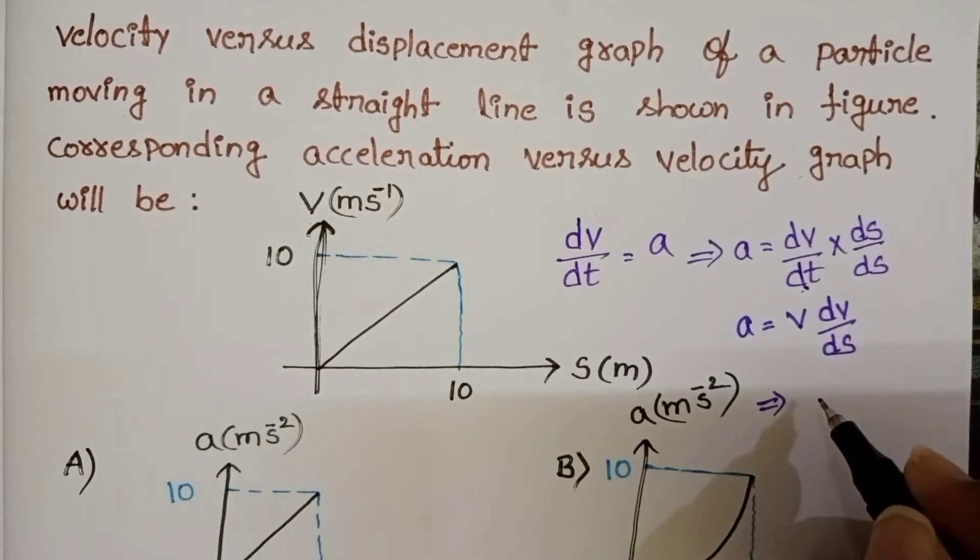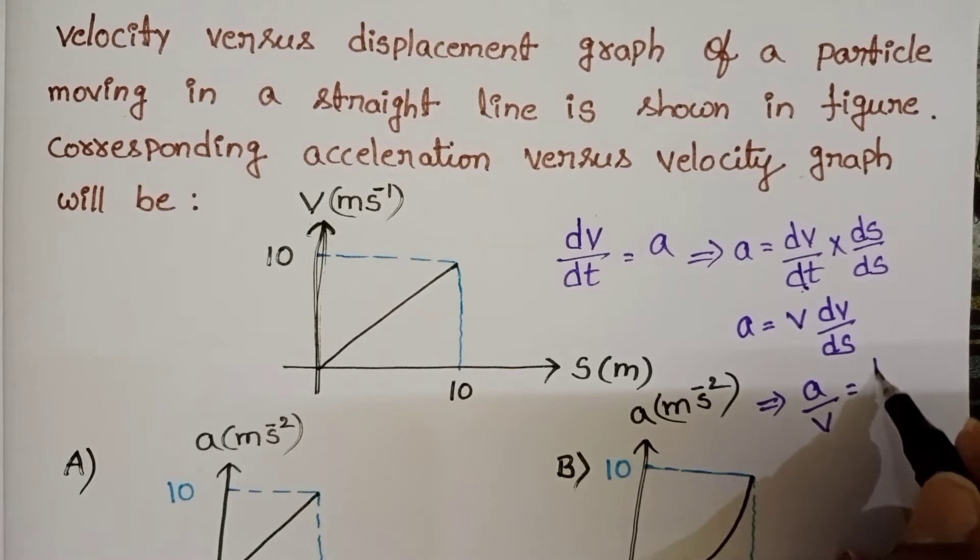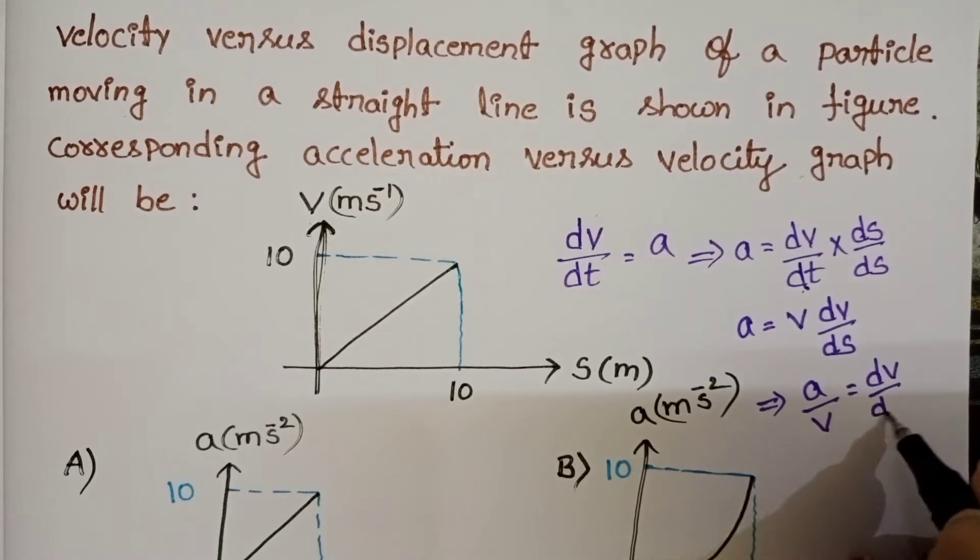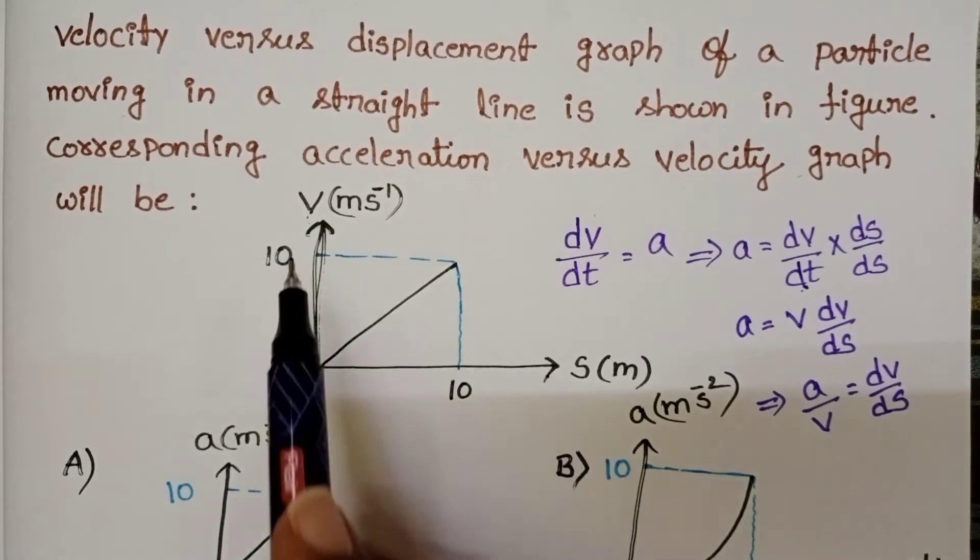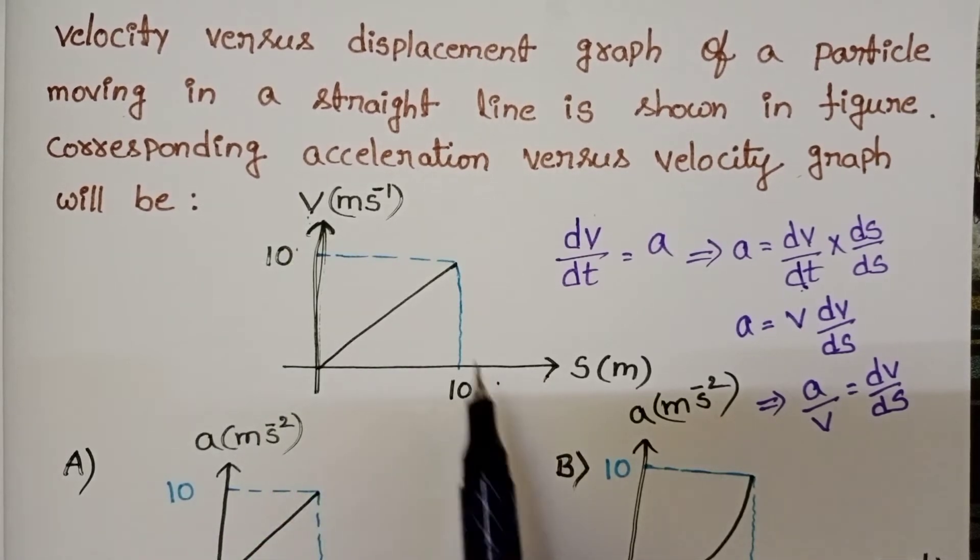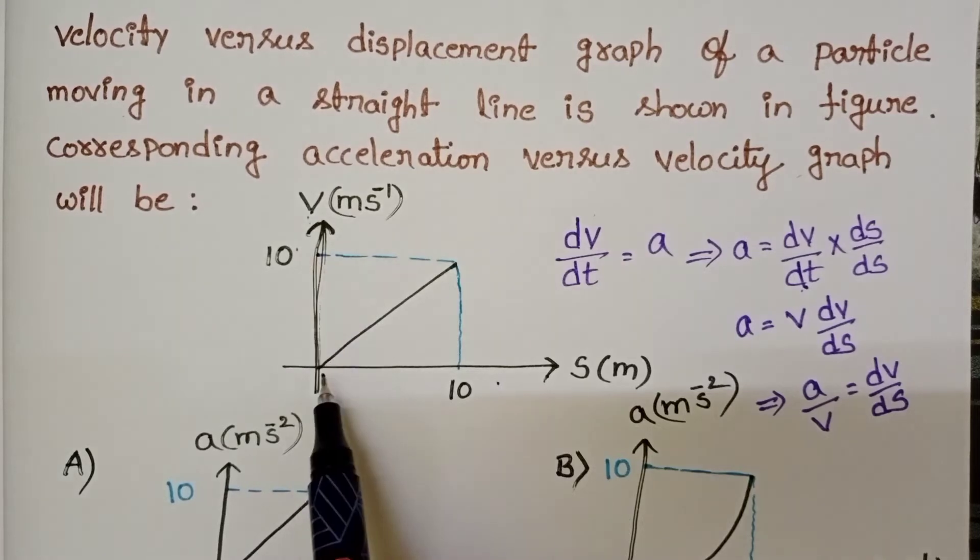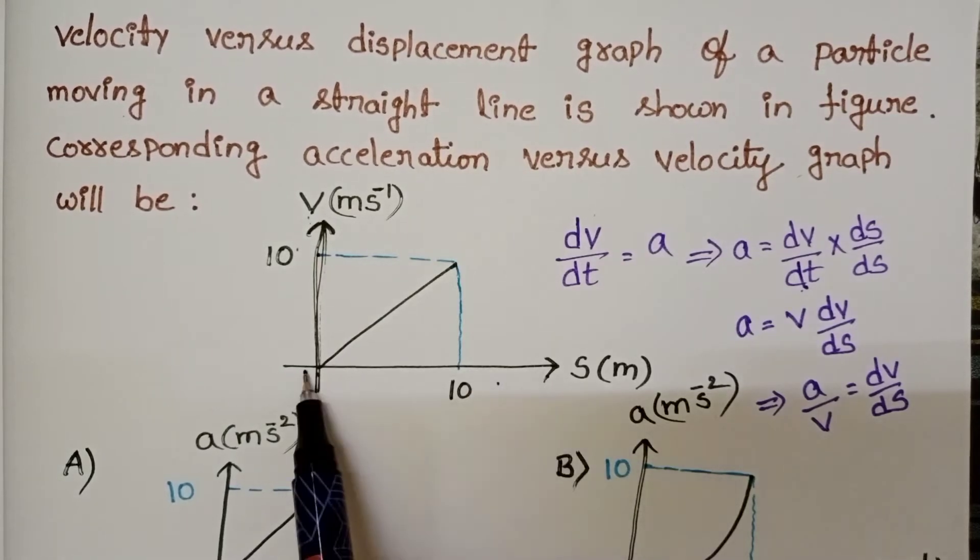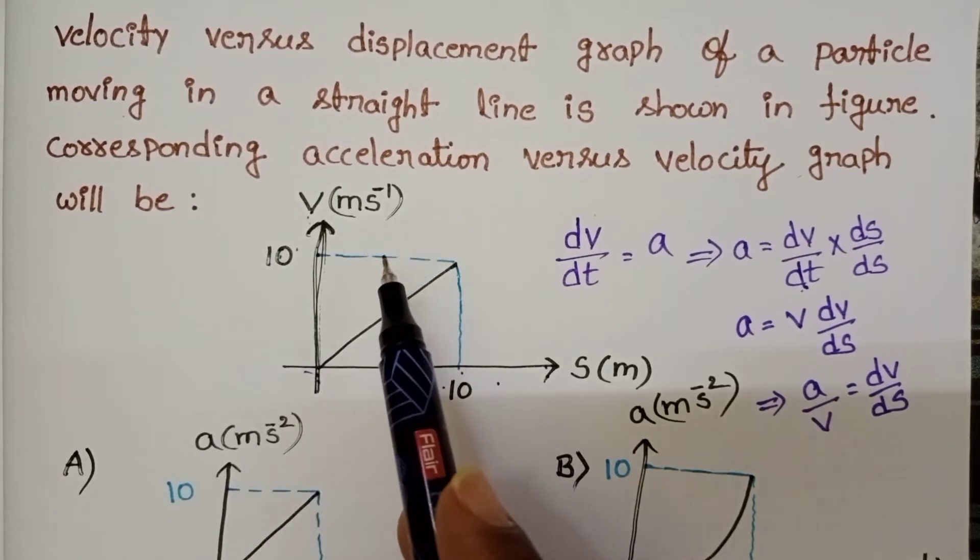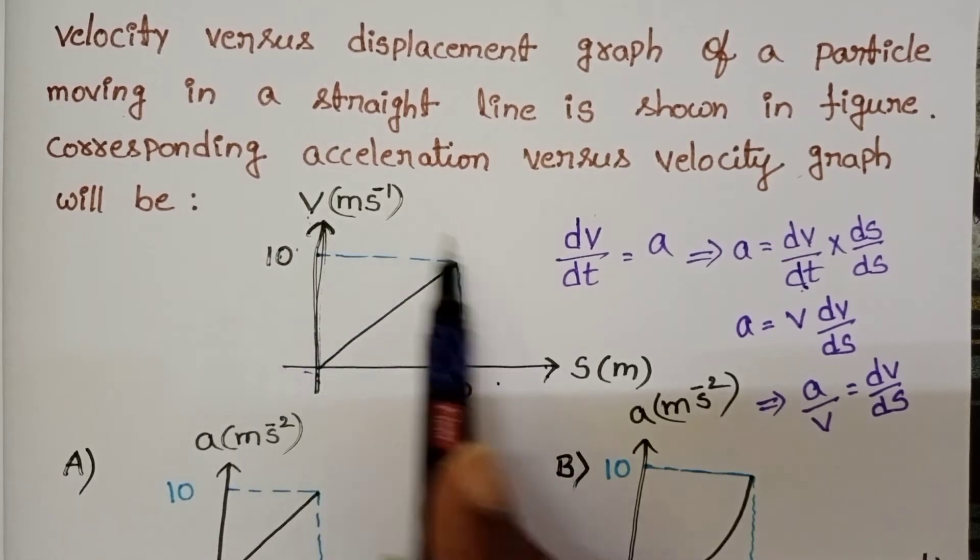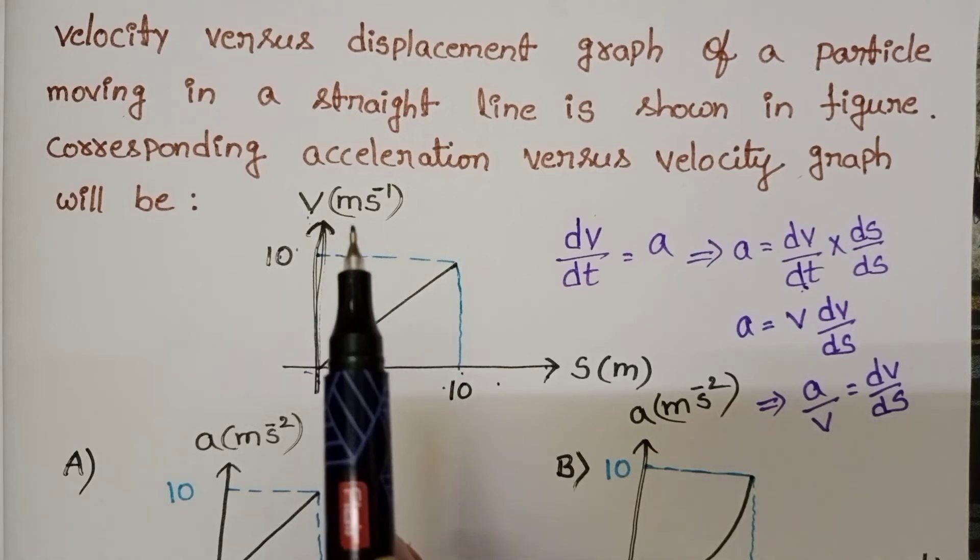From this, a by v equals dv by ds. The slope of this graph: dv is 10 minus 0, ds is 10 minus 0, so 10 by 10 equals 1. The slope of this graph is 1.